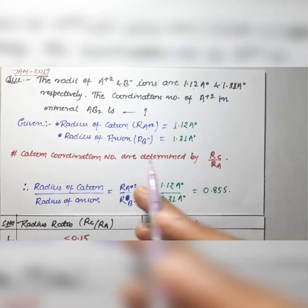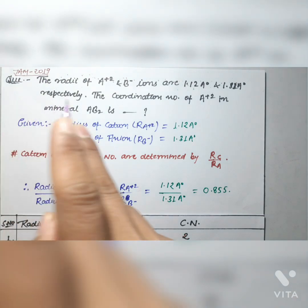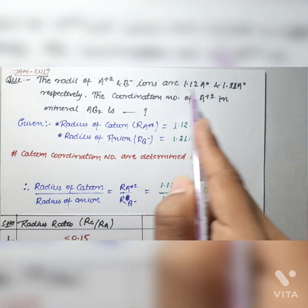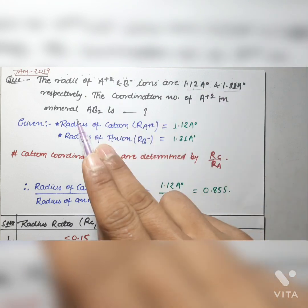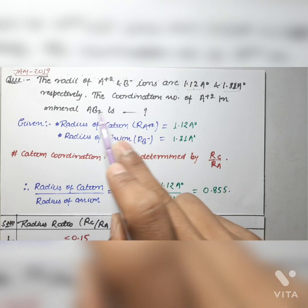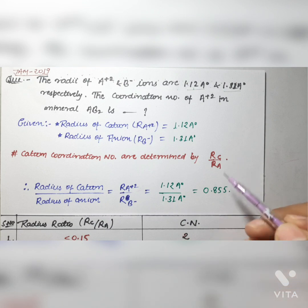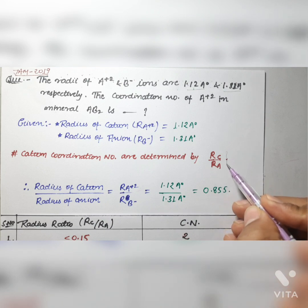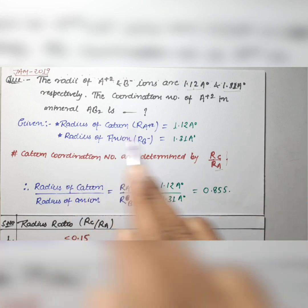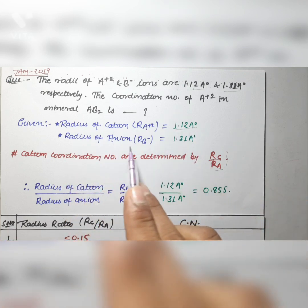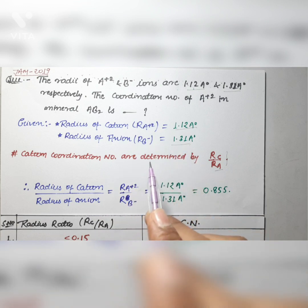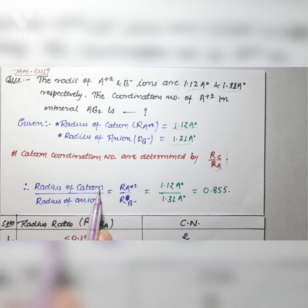The next question is taken from JAM 2019. The radii of A²⁺ and B⁻ ions are 1.12 Å and 1.31 Å respectively. The coordination number of the A²⁺ ion in mineral AB₂ is what? To find the cation coordination number, you first calculate the radius ratio: radius of cation divided by radius of anion. So it is 1.12 divided by 1.31, which equals 0.855.